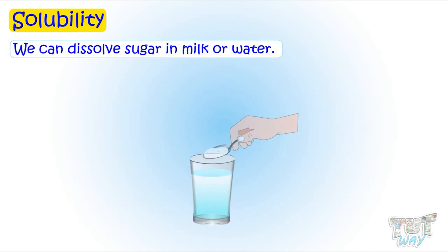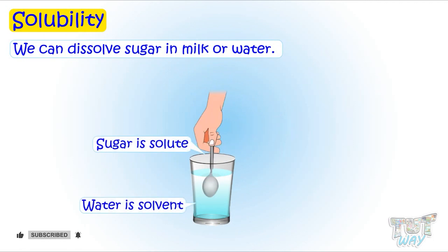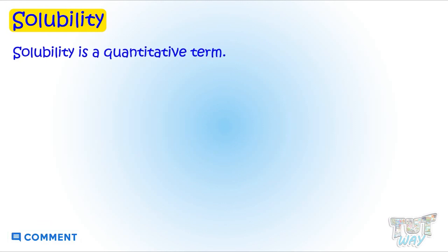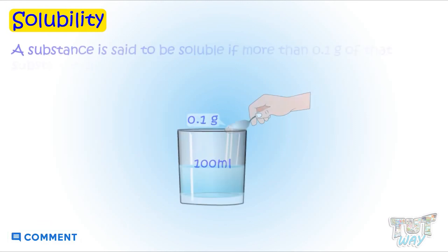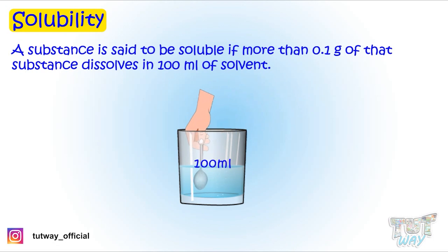We can dissolve sugar in water or milk, so here sugar is the solute and water or milk is the solvent. Now let's learn more about solubility. Solubility is a quantitative term. A substance is said to be soluble if more than 0.1 gram of that substance dissolves in 100 ml of solvent.